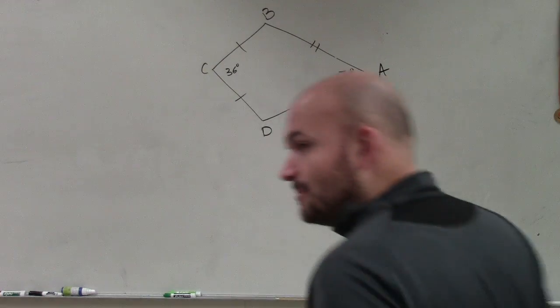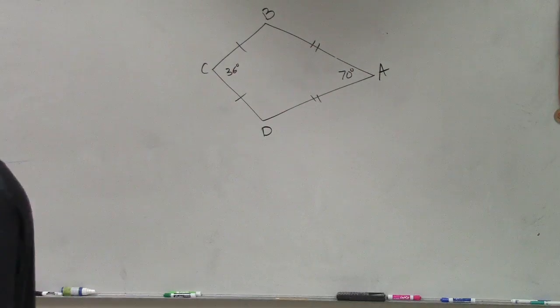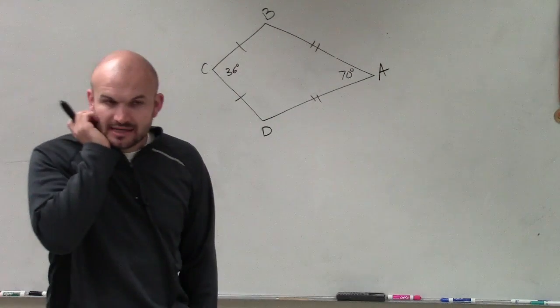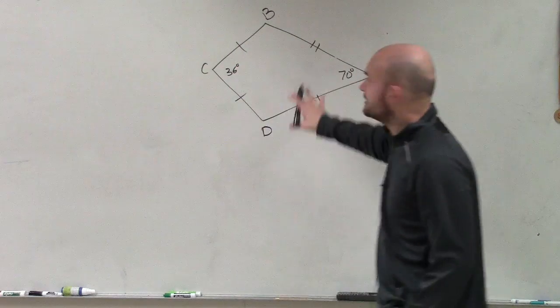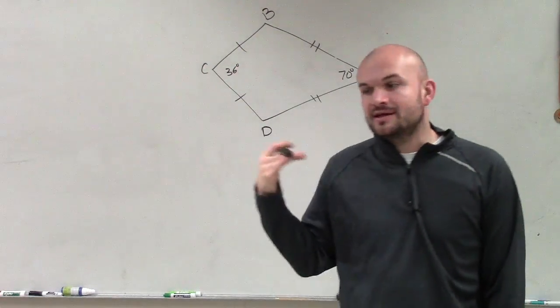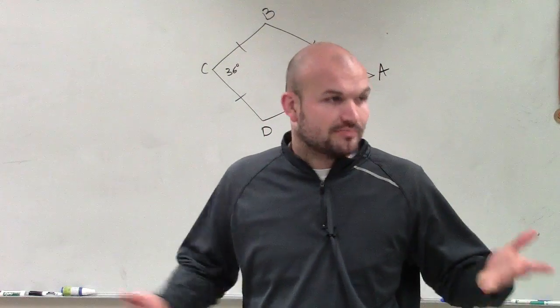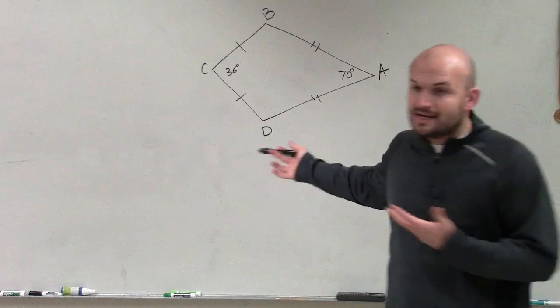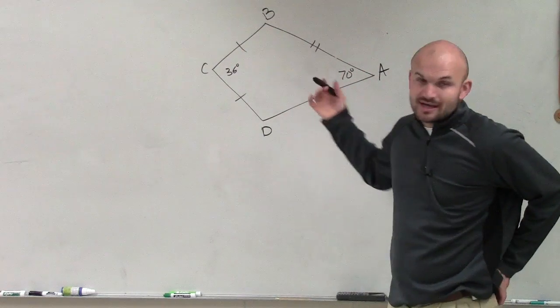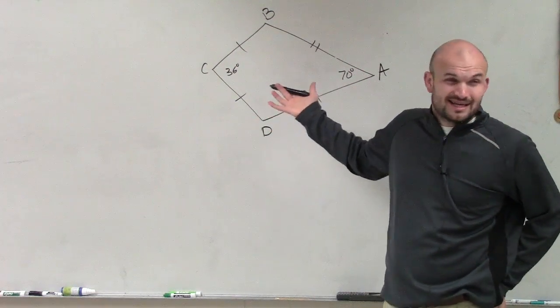So on this example, one of the things we noticed from our notes from last class period. Remember when we're talking about a kite, a kite did not have any parallel sides. There's no parallel sides. So right now I can see we're not showing any parallel sides, but it doesn't look like any sides could be parallel.